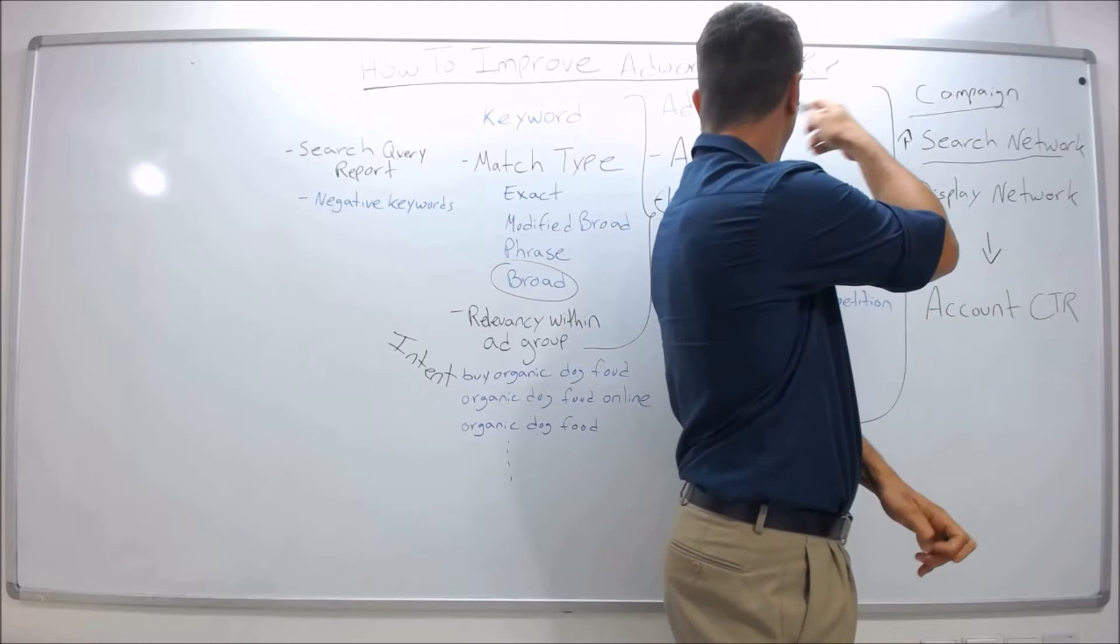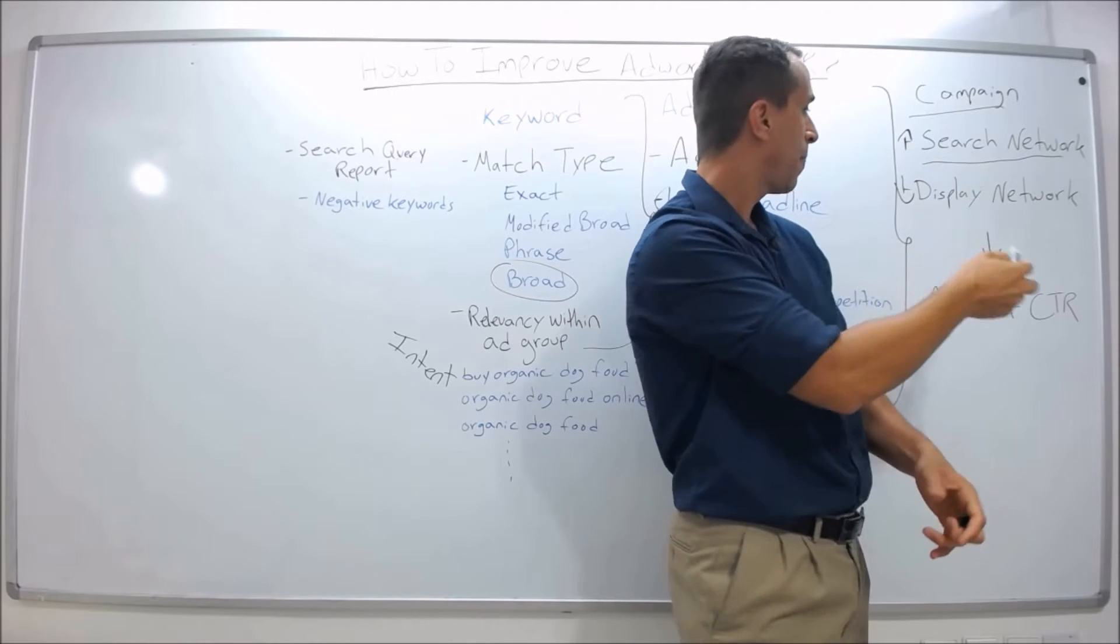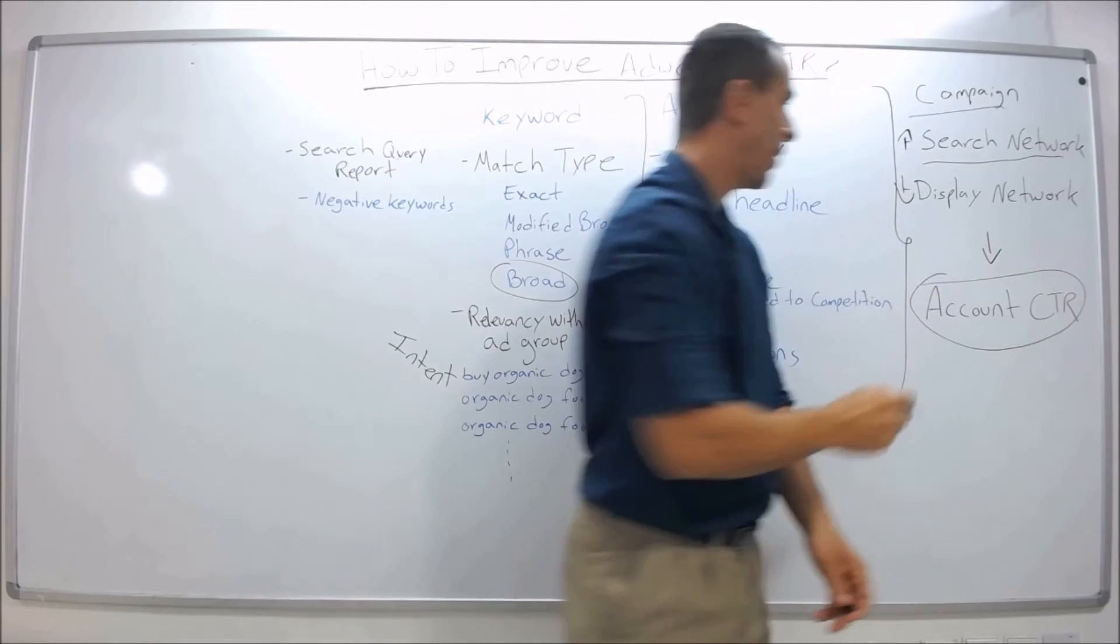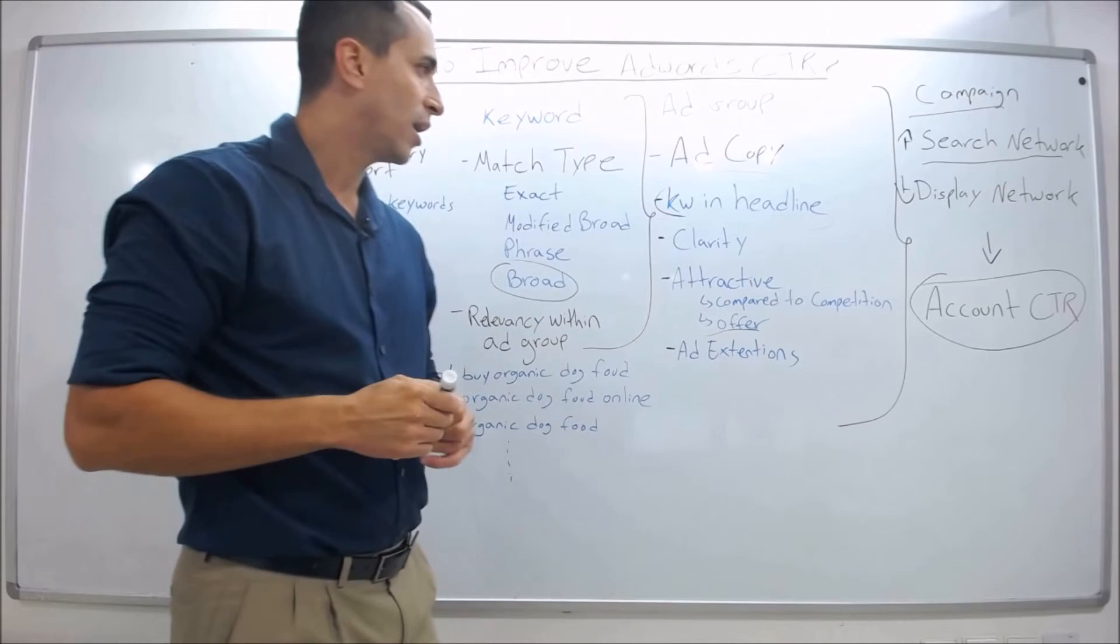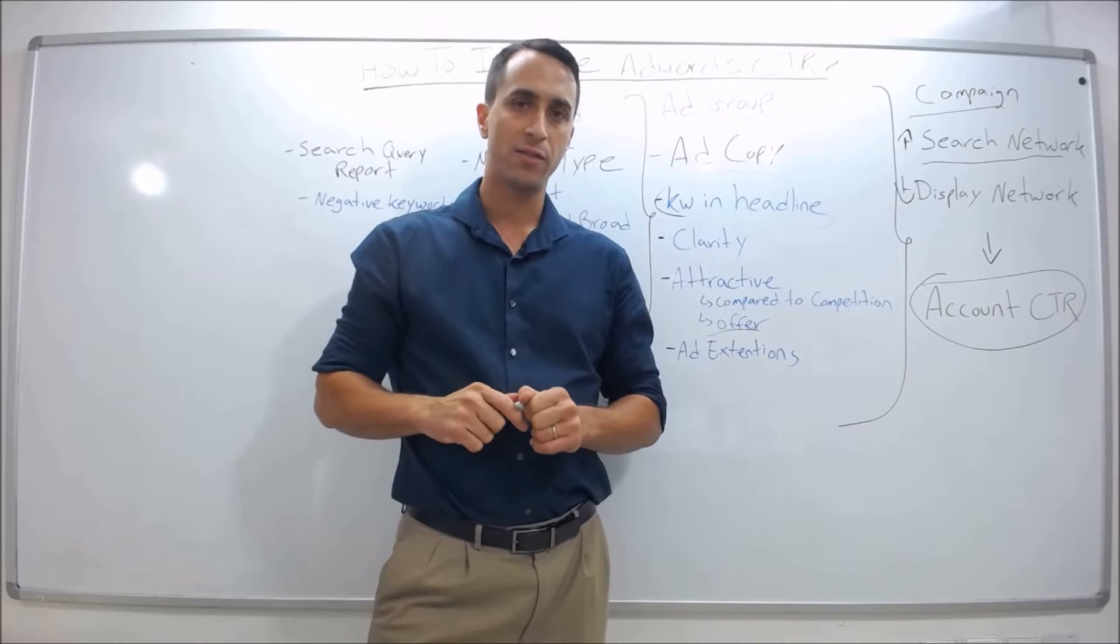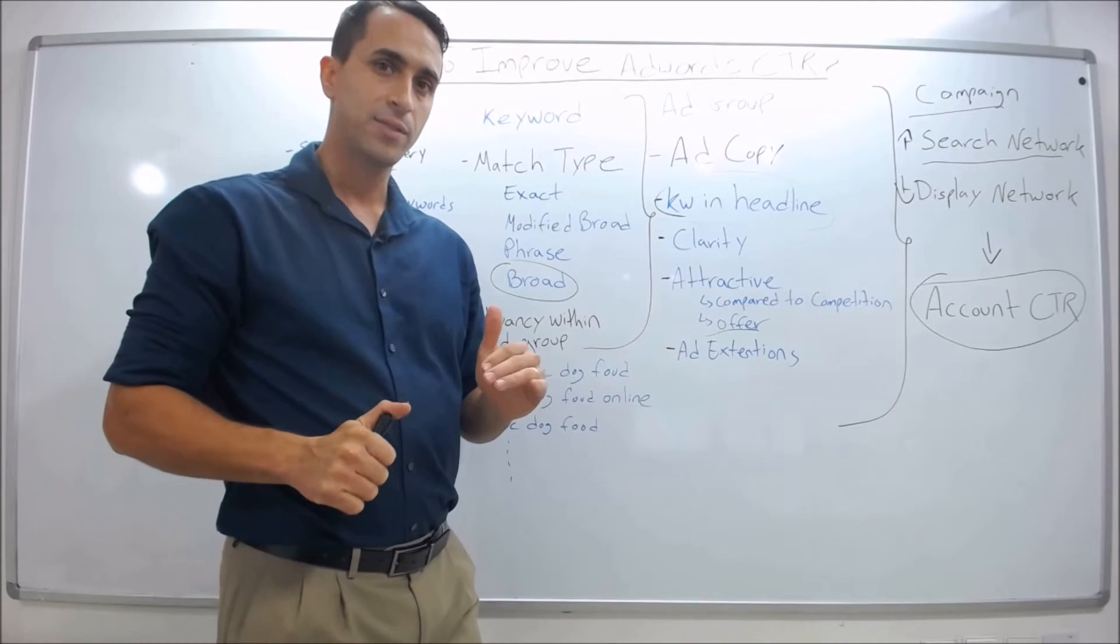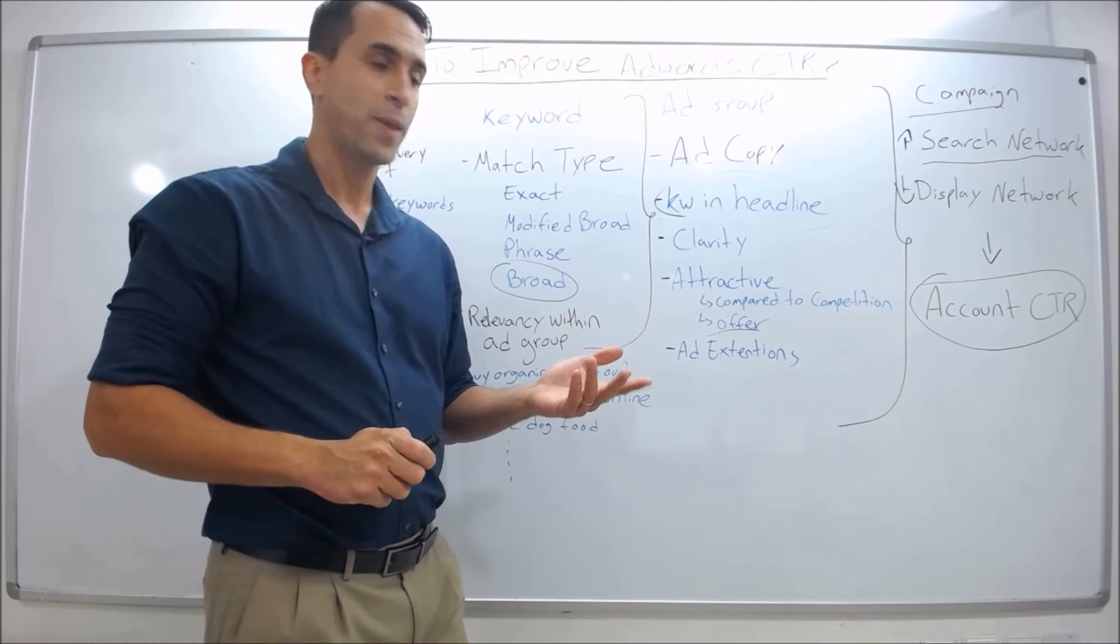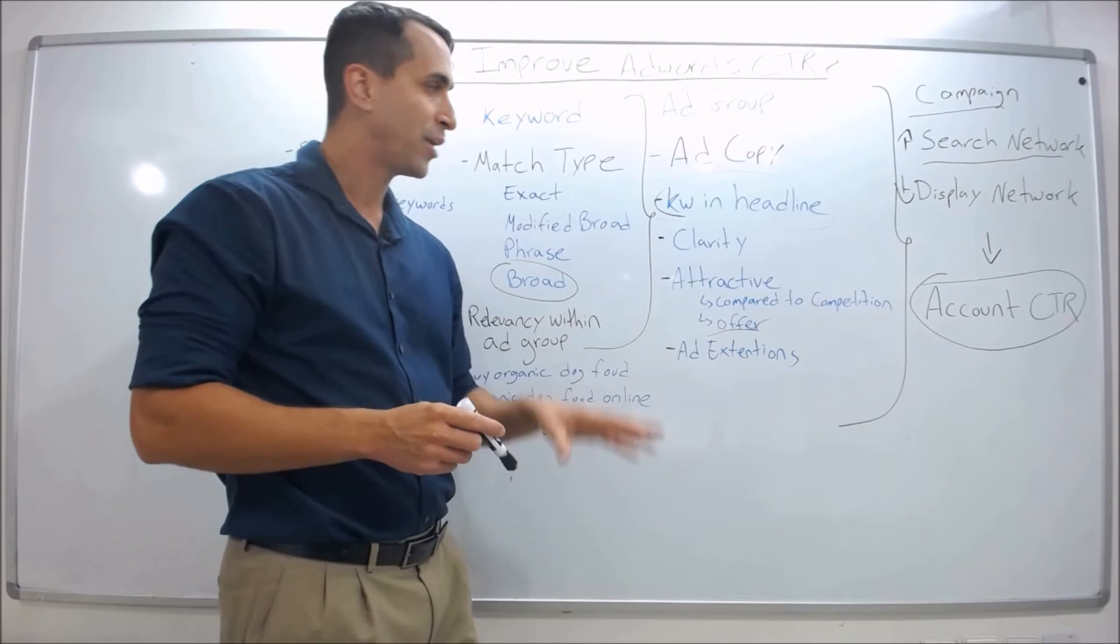As you optimize the keywords and ad copy aggregating up to the campaign, the campaigns aggregate up to the account level and that's what you're going to be optimizing. While you're optimizing, look at your average account CTR. See which campaigns fall under average, and then in that campaign, see which ad group has the highest number of impressions and falls under the average CTR for that campaign, then optimize that.